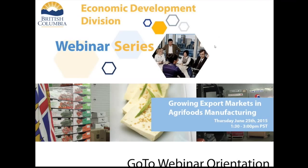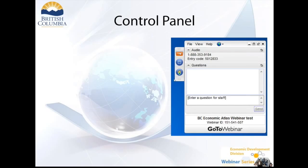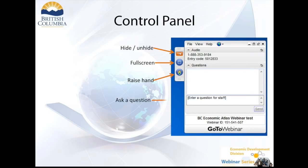On the screen in front of you is the control panel you should have. The orange icon will change whether that control panel sticks out into your screen or snaps to the side and hides. The blue icon will make it full screen. If you have any questions or issues, feel free to use the raise a hand button. We will be having a question and answer period at the end, so feel free to type your questions into the box below.